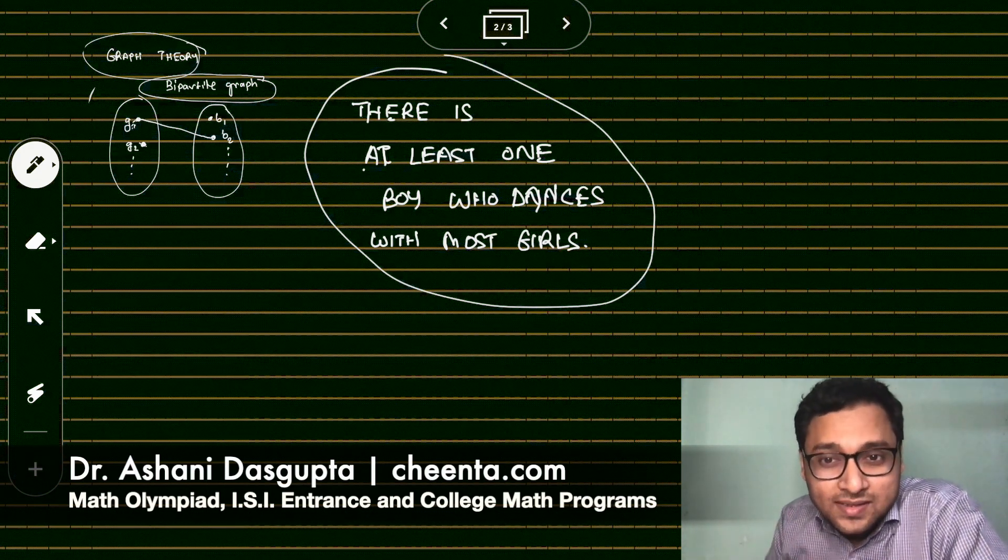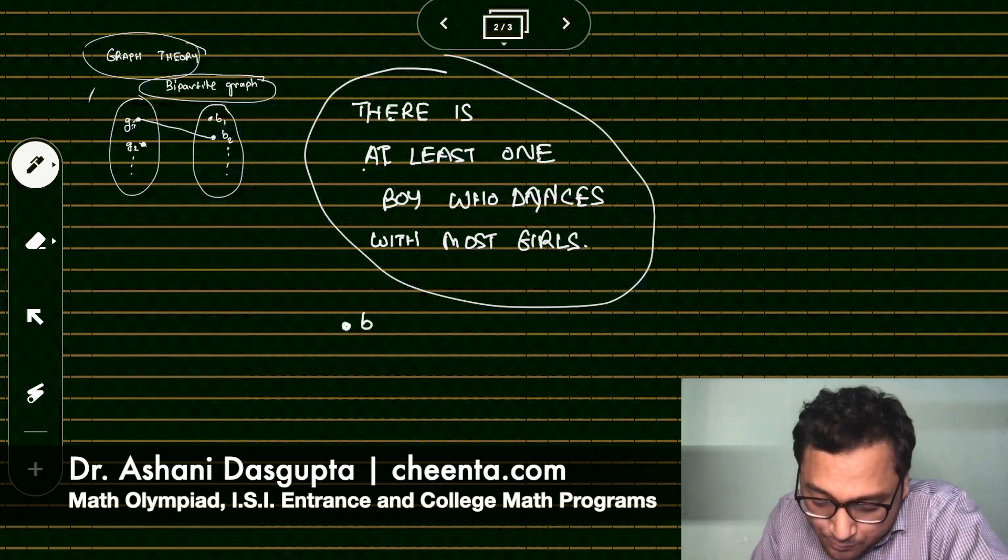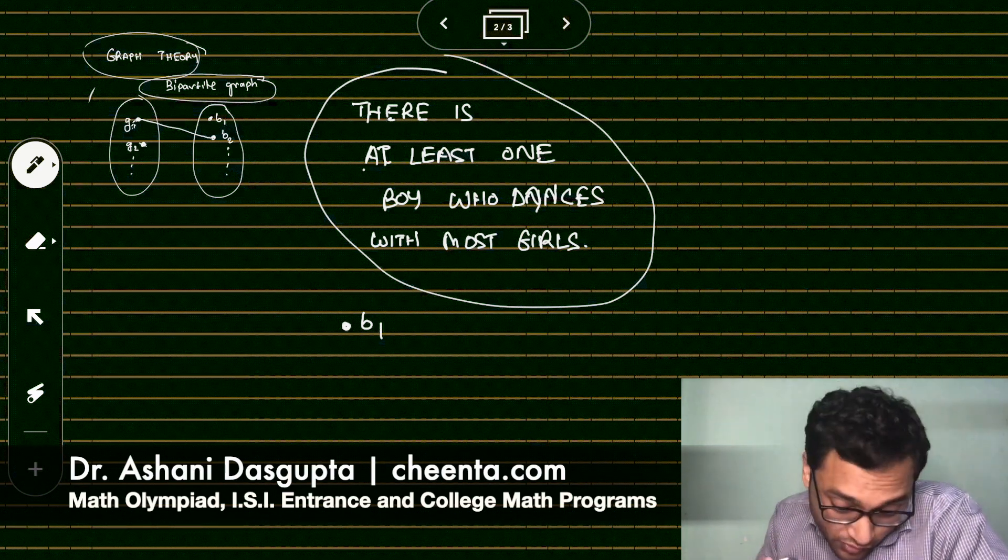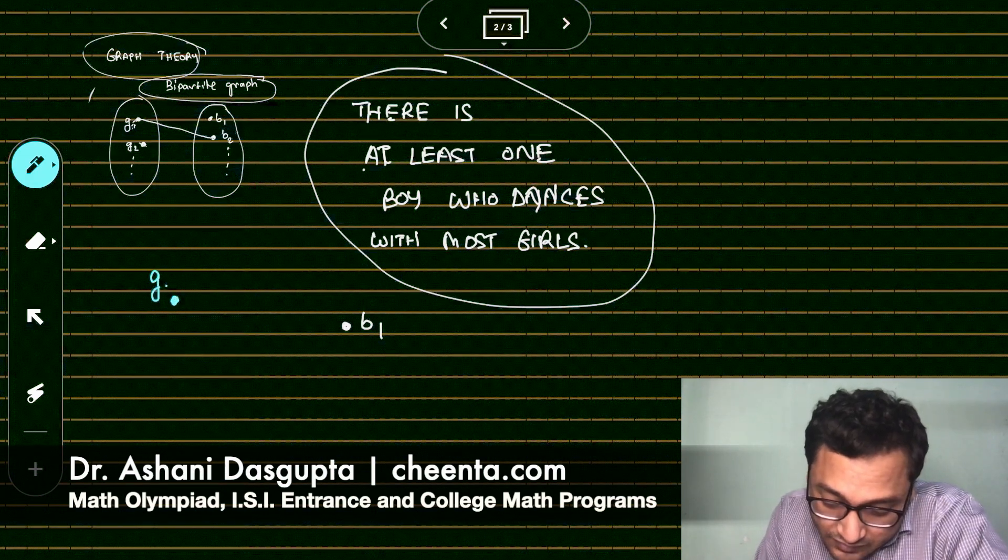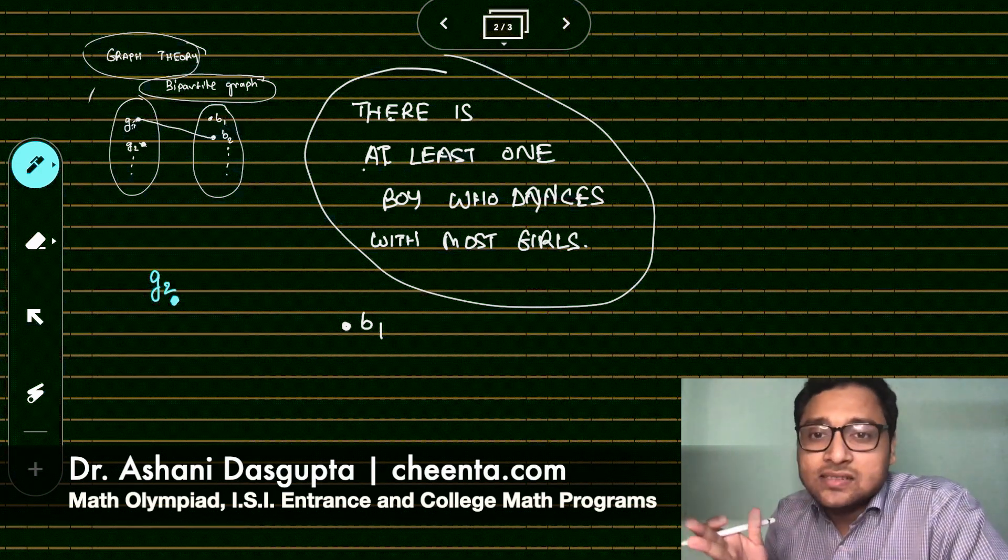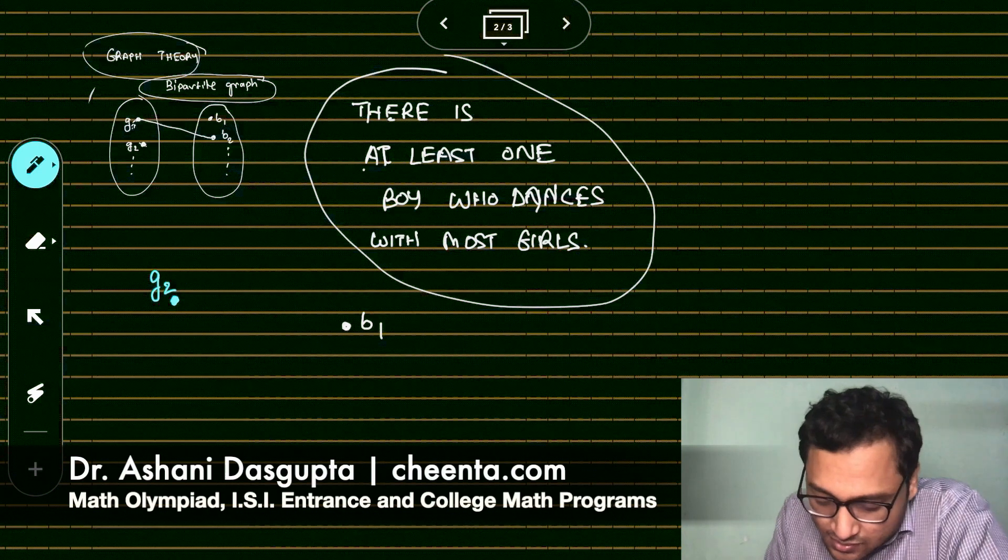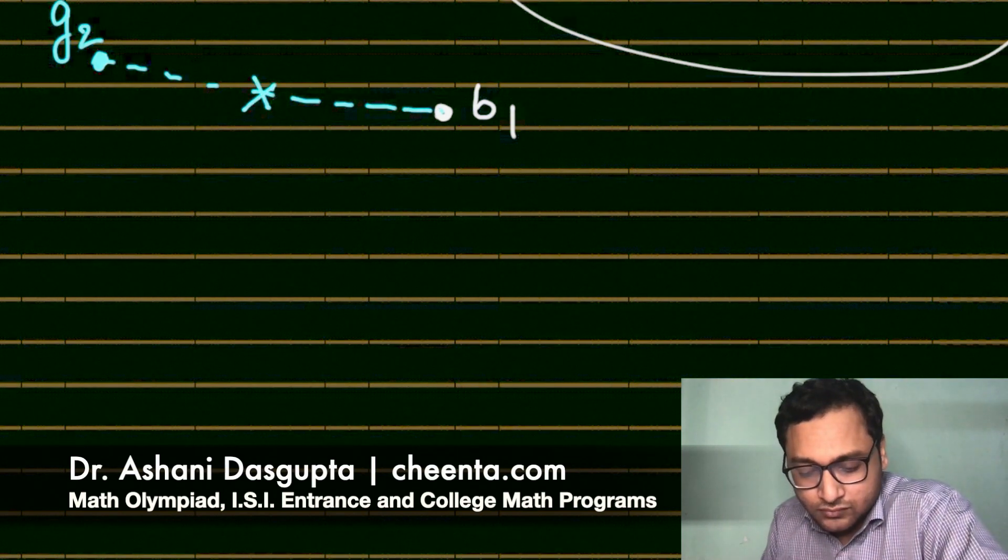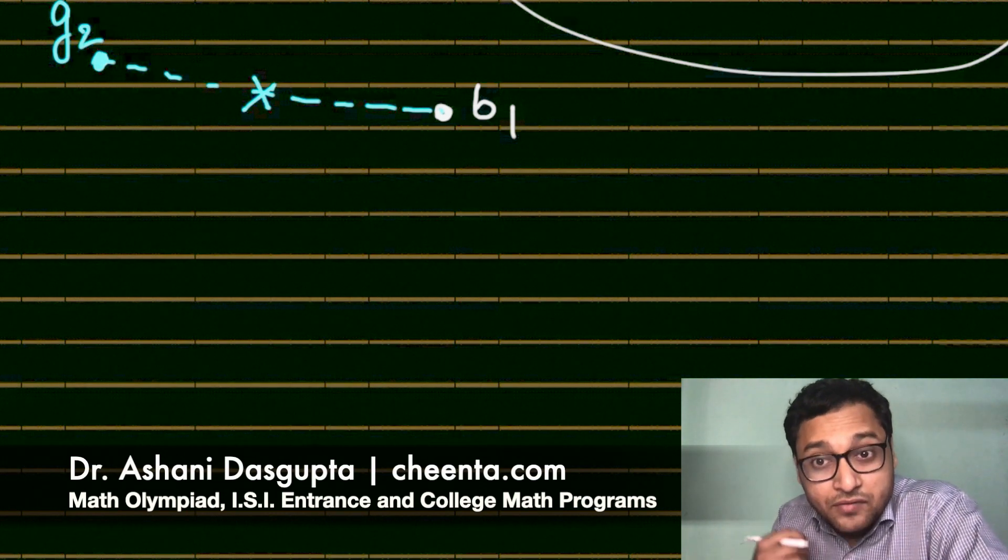You take the extreme case and then something nice happens. The problem sort of magically opens up. So there is one boy, let's see how this works here. There is one boy, let's call him B1, who has danced with most number of girls. Now, of course, there will be at least one girl, let's call that girl G2, with whom B1 has not danced. Why? Because no boy dances with every girl. So there will be at least one girl with which B1 has not danced. So let's connect these two dots using a broken edge.